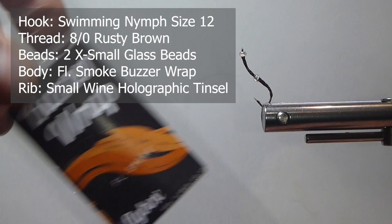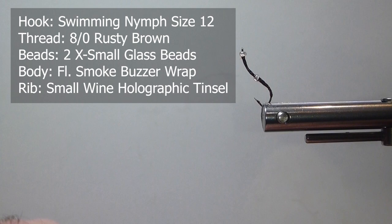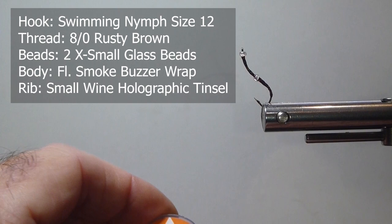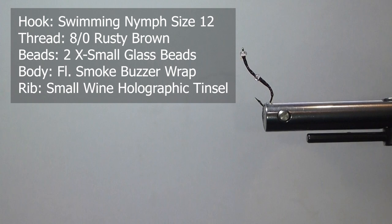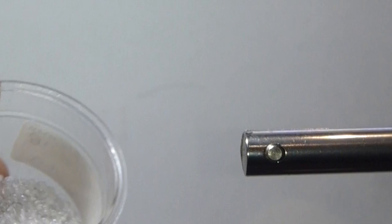I'm going to use some fluorescent smoke buzzer wrap. This is coming out of England. It's very nice for your chronimids and also for the rib. I'm going to use some holographic tinsel and this is small and I like using the wine color instead of the red. It's not quite so bright and you do get the nice red segmentation and it's not quite so loud. It's something I've kind of found I like it a little better. But up to you. You can try all the color combinations and go wild with this one.